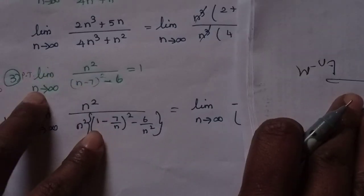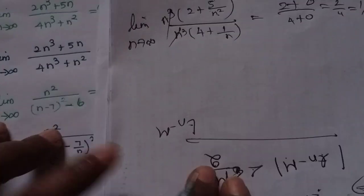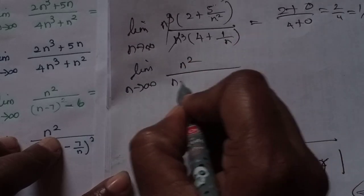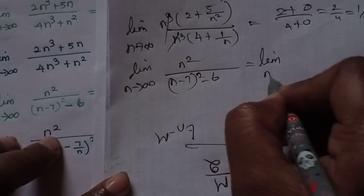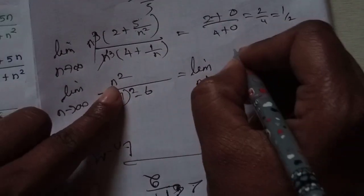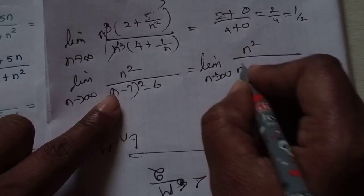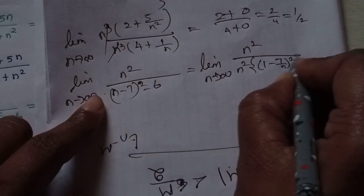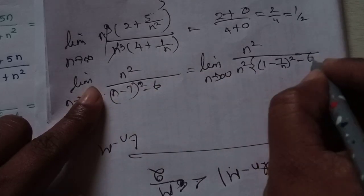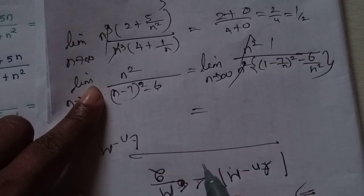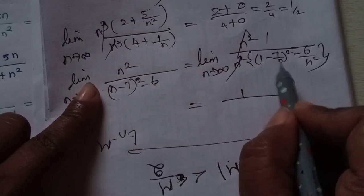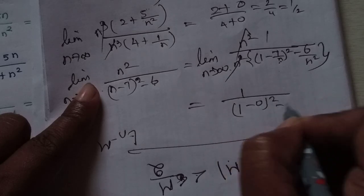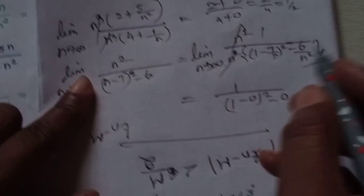Limit n tends to infinity of n² divided by (n minus 7) squared, minus 6. We divide by n²: (n minus 7) squared over n² equals (1 minus 7/n) squared. Dividing through by n² gives (1 minus 7/n)² minus 6/n². Applying limit: 7/n tends to infinity gives 0, so 1 minus 0 all squared minus 6 divided by infinity squared is 0. The answer is 1.